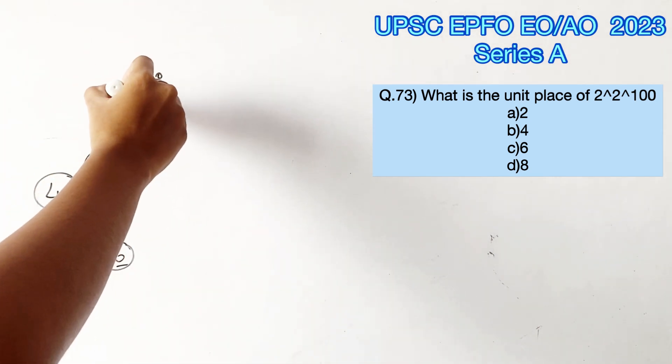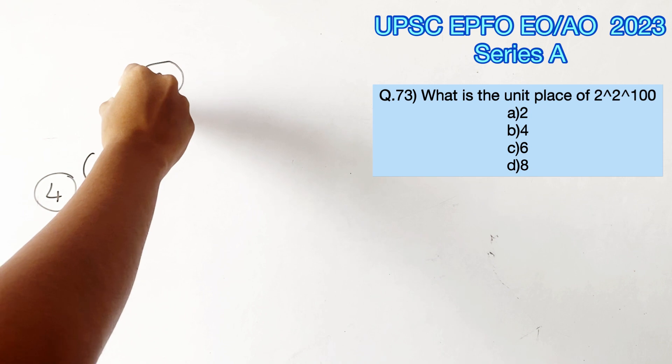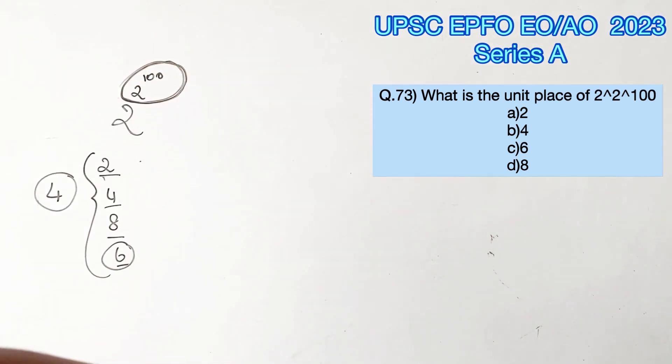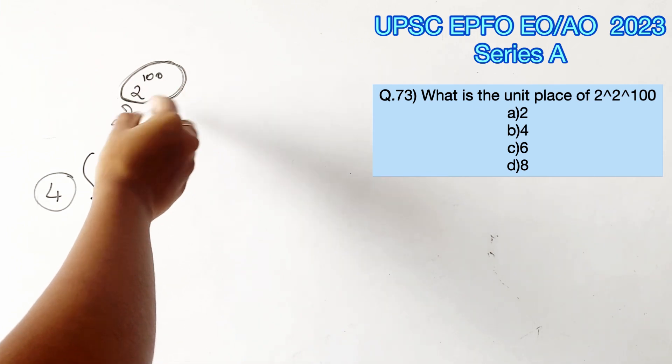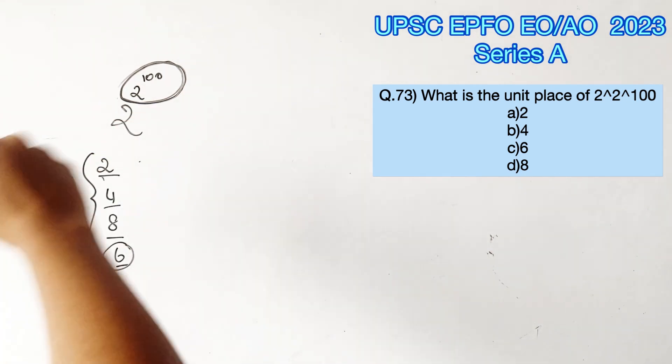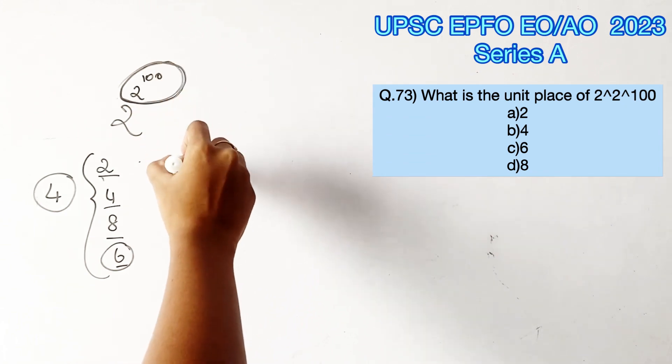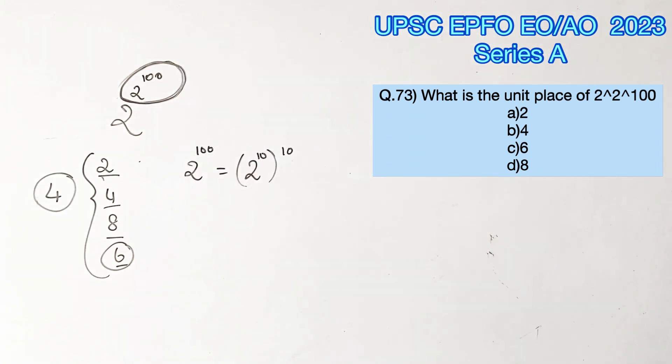Now we have to find if 2 power 100 is divisible by 4. We know that the divisibility rule of 4 is nothing but the last two digits of a number should be divisible by 4. So we will find the last two digits of 2 power 100. 2 power 100 can be written as 2 power 10, the whole power 10.